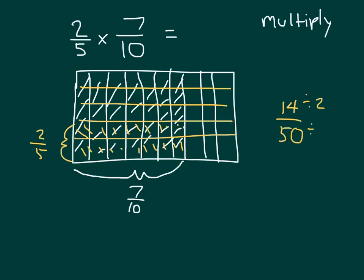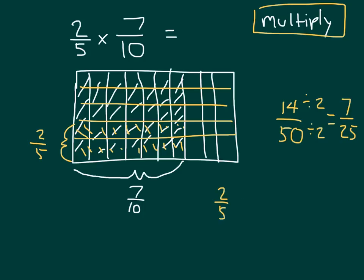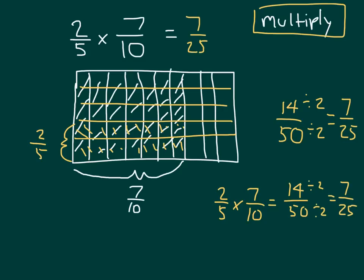I can simplify that, or reduce it, to seven-twenty-fifths. Let's see if the equation, when we multiply, gives the same answer — which it should. Two-fifths times seven-tenths: we multiply the numerators, which is two times seven, which is fourteen. Then in the denominators, we take five times ten, which is fifty. That is what we got before we simplified it. We do get that same answer. Read the whole equation with me: two-fifths times seven-tenths equals seven-twenty-fifths.